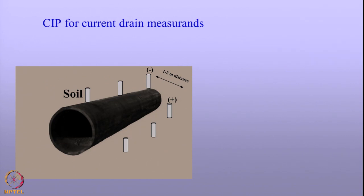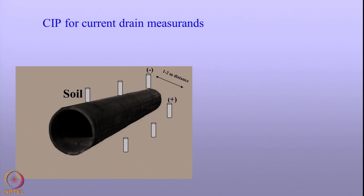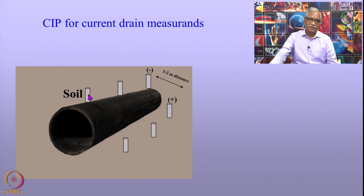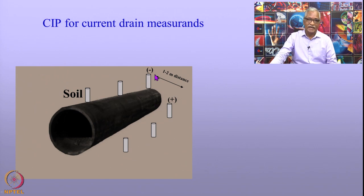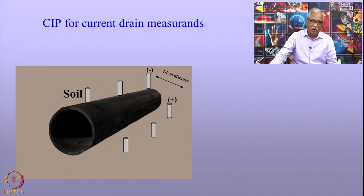Another type of close interval potential measurement uses one electrode kept well above the pipeline and the other on either side at a distance of 1 to 2 meters. The potential is measured between these two reference electrodes. If this potential is positive, current enters in one direction; if negative, in the other direction. The advantage of this technique is you can determine whether the pipeline is receiving current or acting as a drain where corrosion occurs.